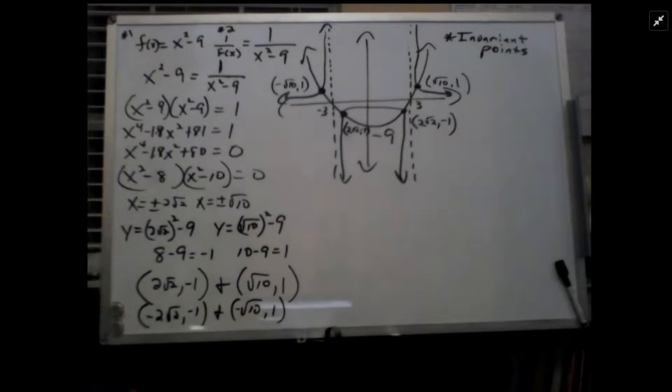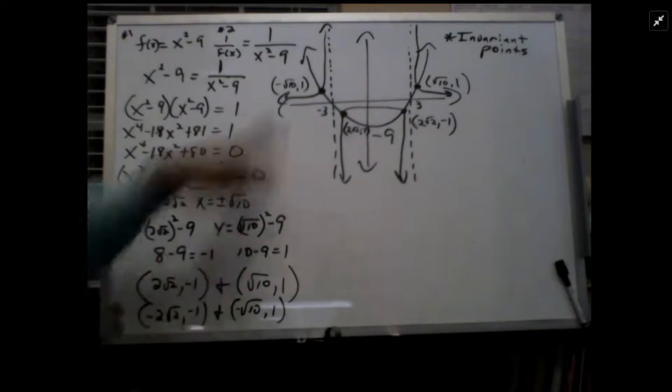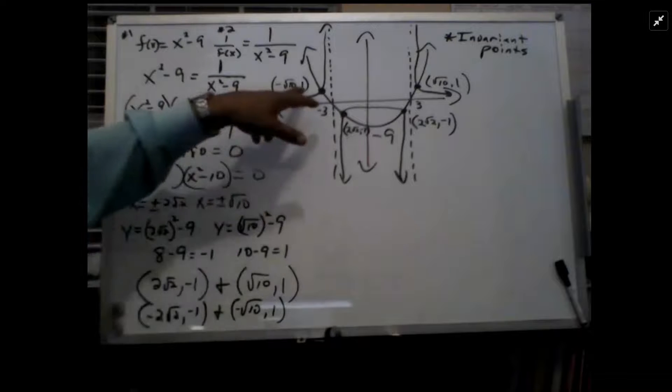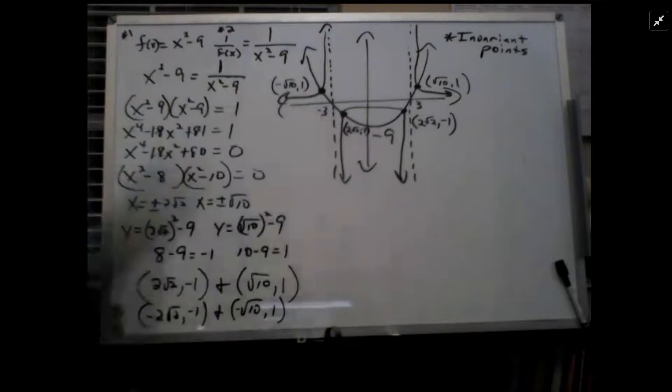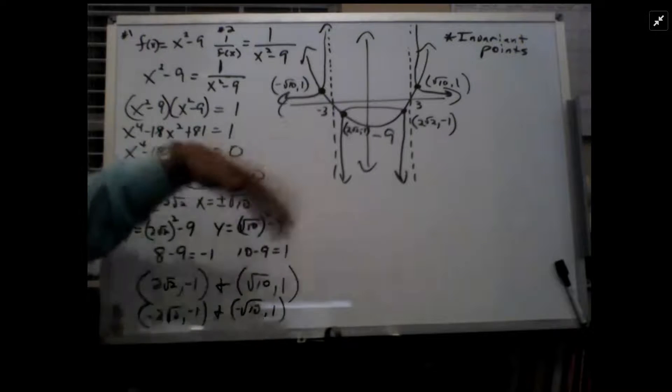And just so what happens is that one of the definitions of the invariant points is that the f of x either equals 1 or negative 1. Sure enough, here's a 1, and there's a negative 1 for the so-called invariant points. Those are the answers. Those are the four invariant points. And I took the liberty to draw them on a graph.